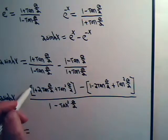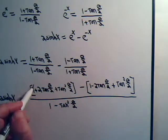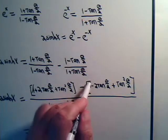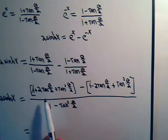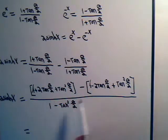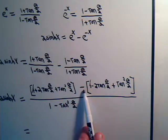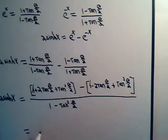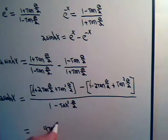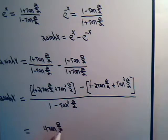Looking at the numerator, the 1 and minus 1 cancel. Then 2·tan(θ/2) minus the minus sign gives plus 2·tan(θ/2), so altogether that's 4·tan(θ/2) in the numerator. The tan²(θ/2) terms cancel out. So the numerator simplifies to 4·tan(θ/2), and the denominator is 1 - tan²(θ/2).